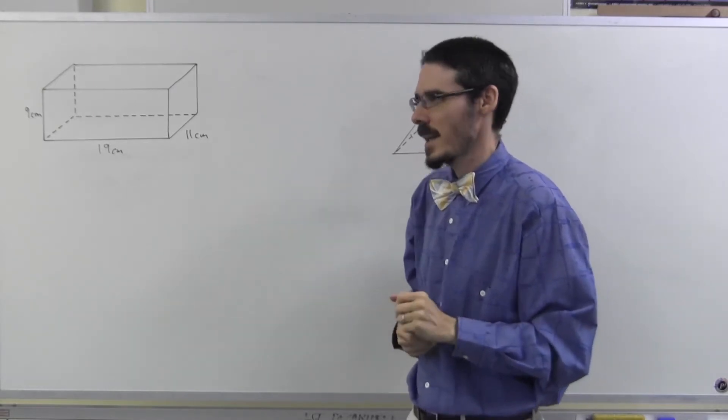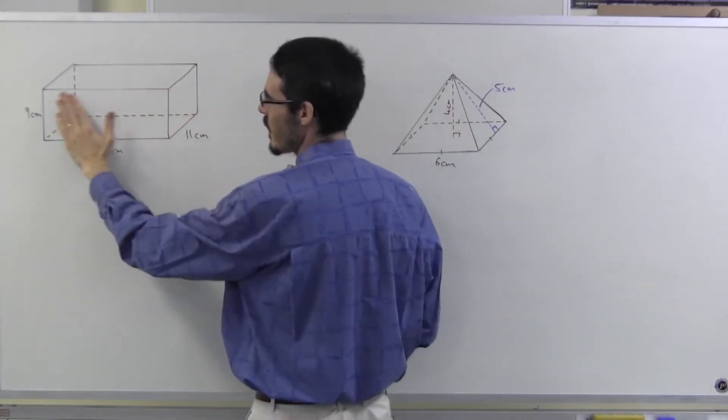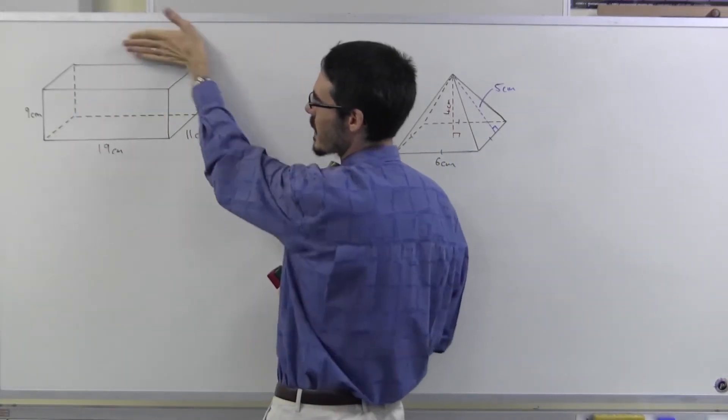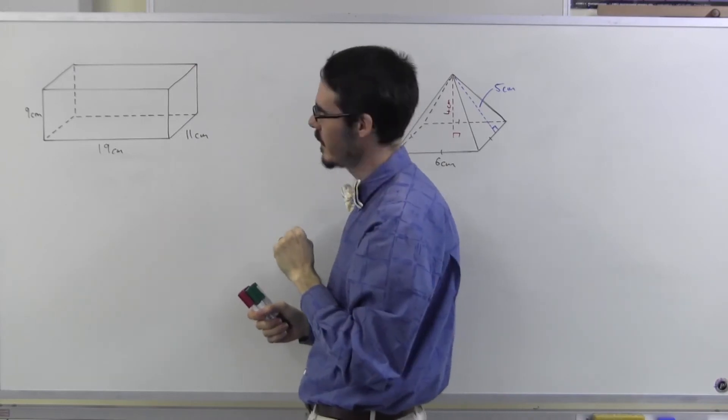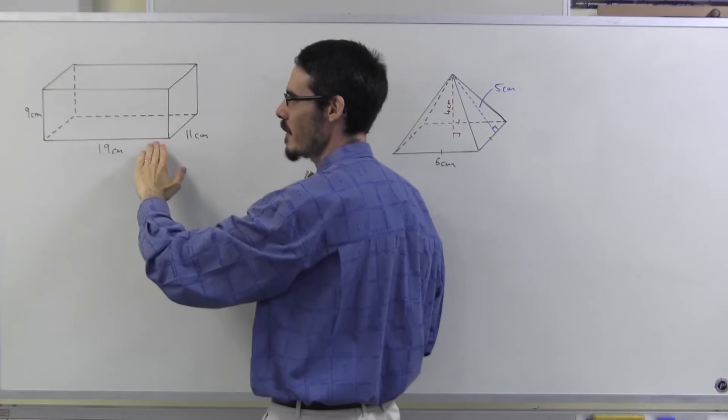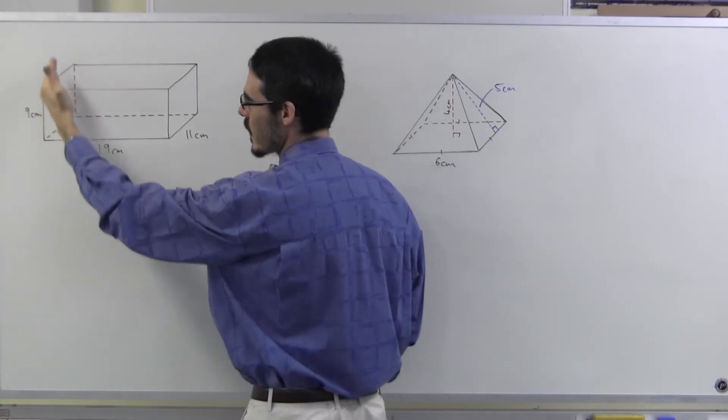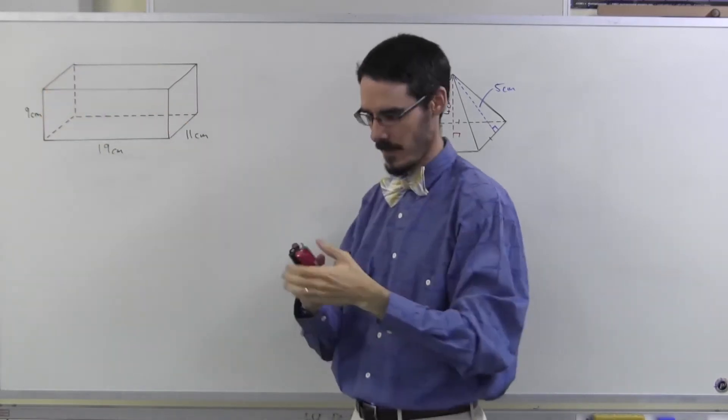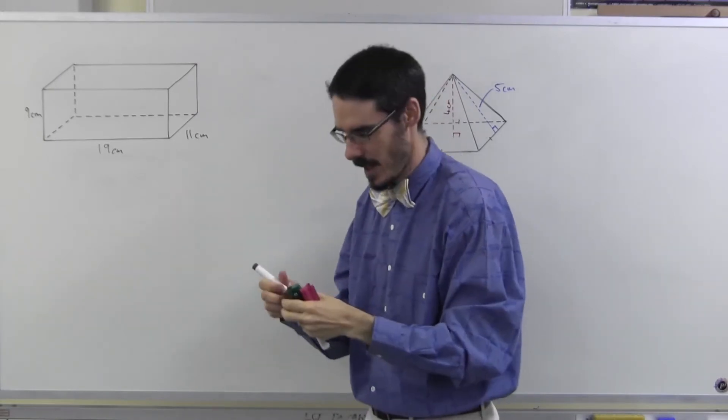Well, if it's a rectangular prism, it's going to have a rectangle on the front and the same rectangle at the back. It's going to have a rectangle on top and the same rectangle on the bottom, and it's going to have a rectangle on the side and the same rectangle on the other side. So let's give those names.